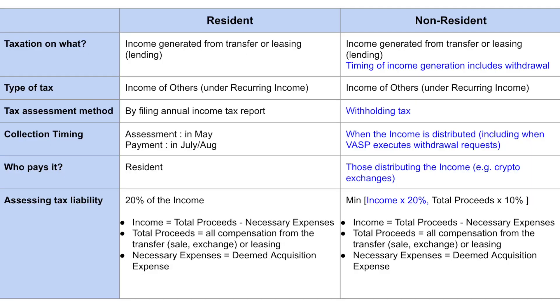In that revision, for the first time the government specified how they're going to treat crypto assets as a taxable asset. So early adopters didn't have to pay any tax. If you're a resident, what you're going to be taxed on is income generated from a transfer or leasing of the asset. The word 'transfer' is a broad term that includes sale as well as inheriting or giving away as a gift.